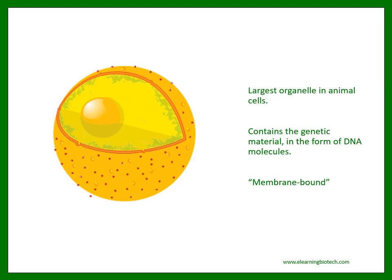The nucleus is the largest organelle in animal cells. It contains the genetic material in the form of DNA molecules. It is membrane bound, which means it has a membrane. On the picture, you can see a representation of a human cell nucleus. The small holes are the pores of the nucleus. The red dots are the so-called ribosomes, the function of which we are going to go through in the next unit. The DNA is contained in the green structure lining the membrane. It is not organized in chromosomes at the moment because the cell is not dividing.